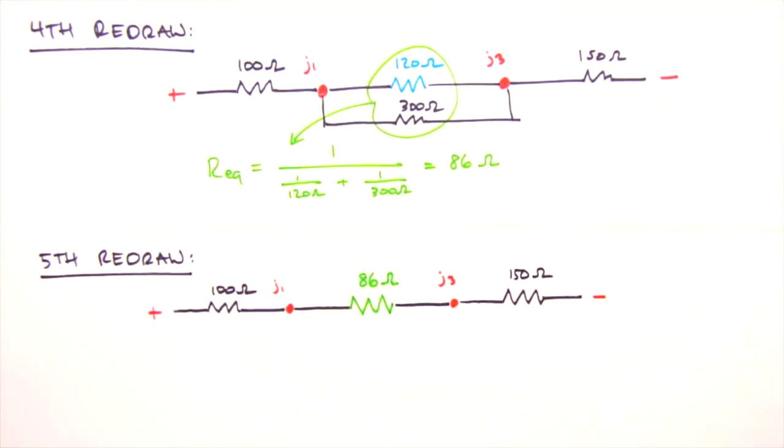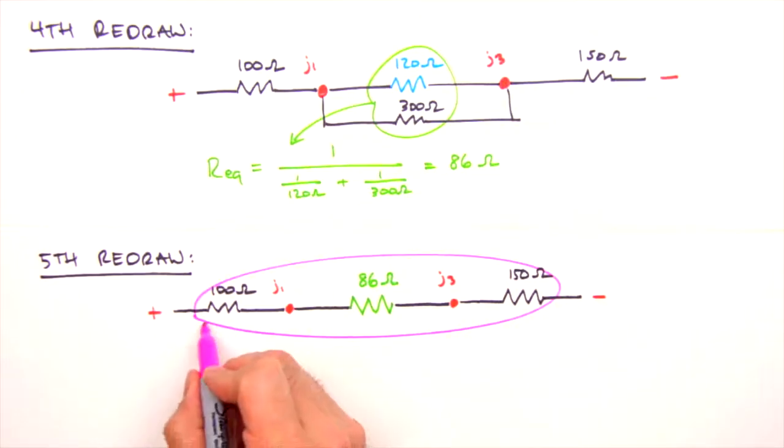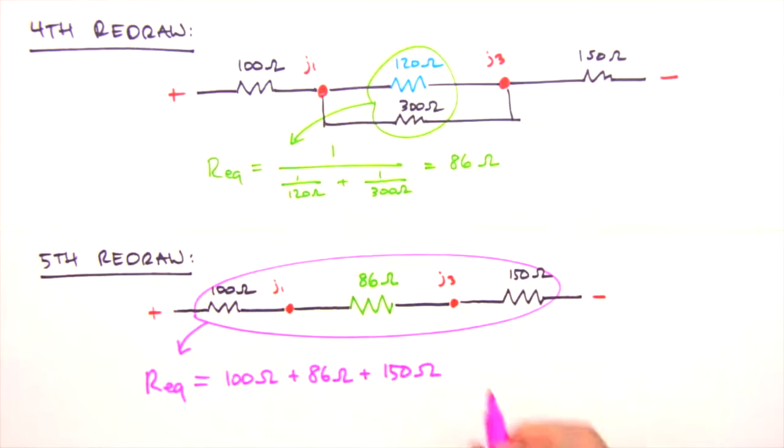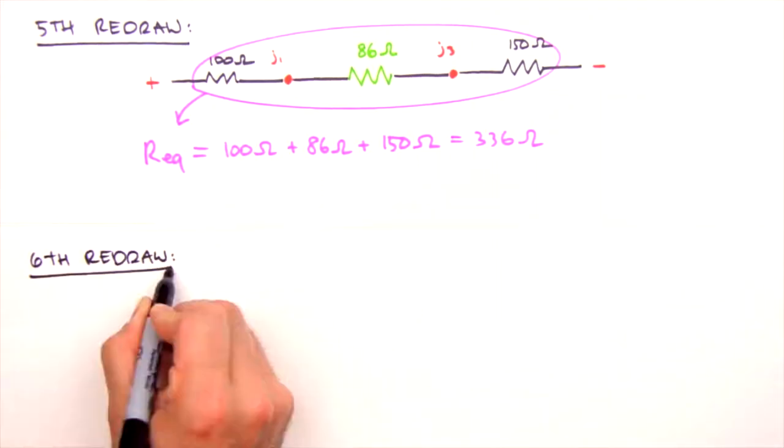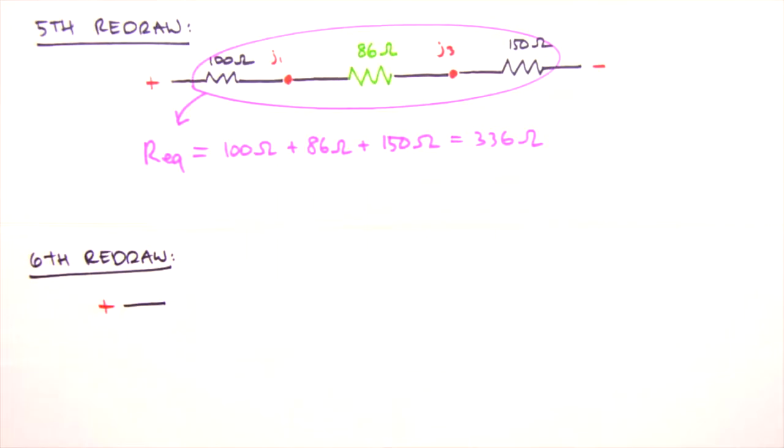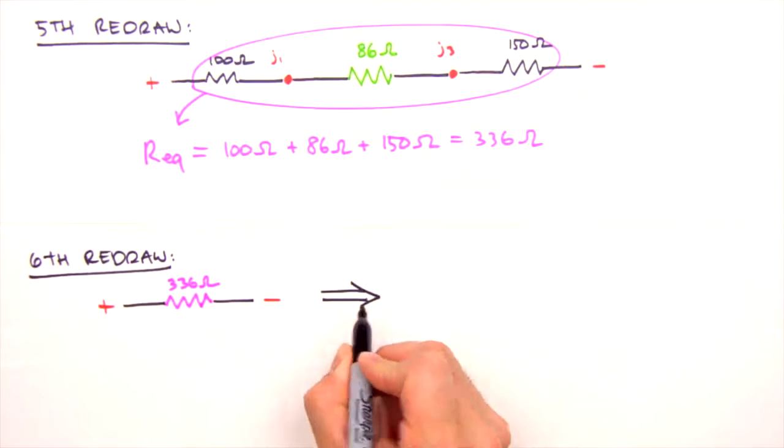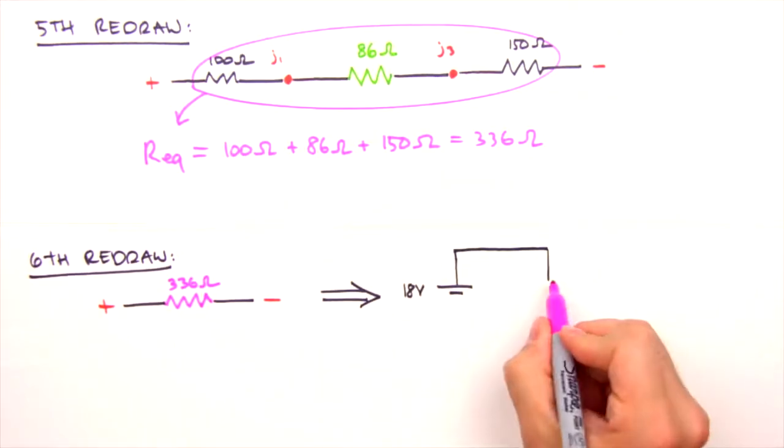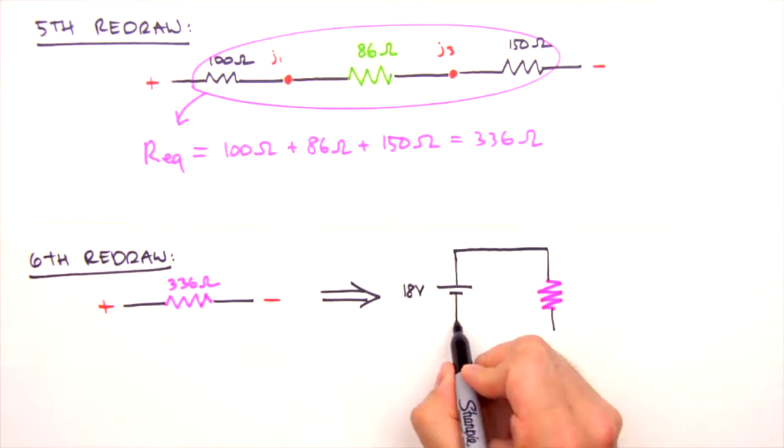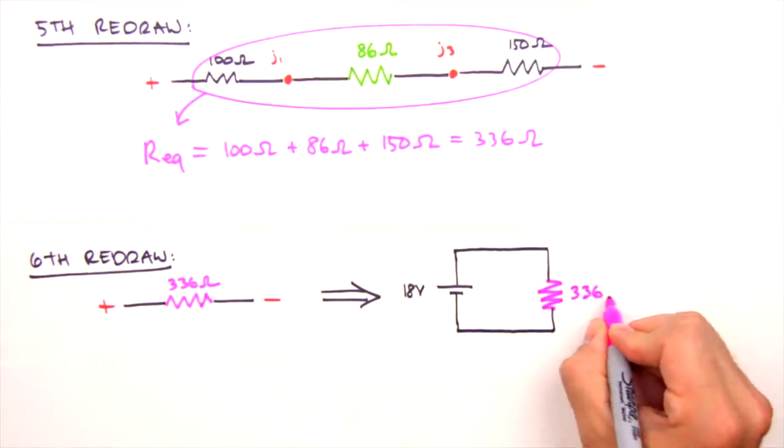This redraw leaves us with three resistors to combine. They're in series, so we just sum their resistances, which yields an equivalent resistance of 336 Ohms. Which brings us to our final redraw. We've reduced our initial six resistors to a single equivalent resistance, which means we're done breaking it down. If we bend our circuit back together, reconnecting the positive and negative sides of the battery, it should be clear that we're left with our old Ohmic friend, the simple circuit.